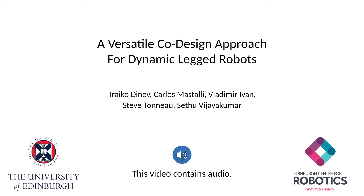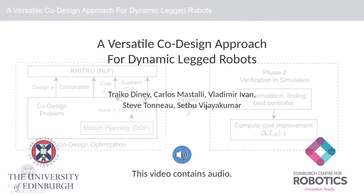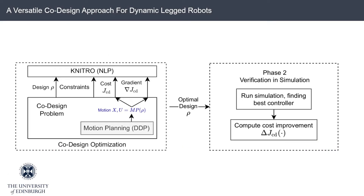To design a robot capable of executing dynamic motions, engineers have to consider both the mechanical design of the robot and the motion it will enable. Co-design aims to automate this process by optimizing both designs and motions of robots together. In this paper, we propose a modular, bi-level optimization approach for robot co-design.